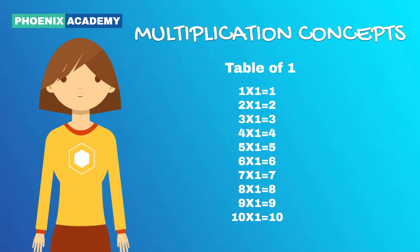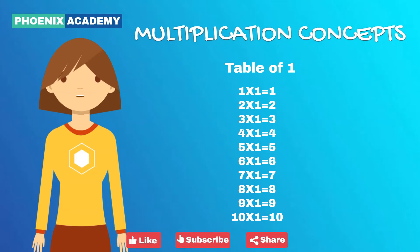Similarly, 3 times 1 equals 3. 4 times 1 equals 4. 5 times 1 equals 5. 6 times 1 equals 6. 7 times 1 equals 7. 8 times 1 equals 8. 9 times 1 equals 9. And 10 times 1 equals 10. We just learned the multiplication table for 1.